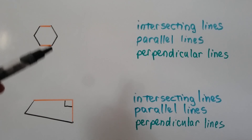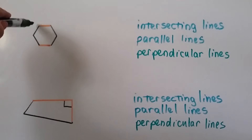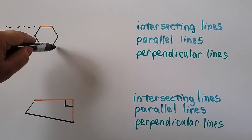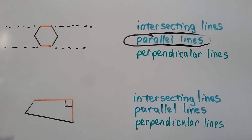Now look at this hexagon and look at the orange lines. Are they intersecting lines? No, they don't cross each other. In fact, if we extended them out on the side, we can really see that they're parallel lines. Are these orange lines perpendicular lines forming right angles where they cross or meet? No, they're not. So these orange lines in the hexagon are just parallel lines.